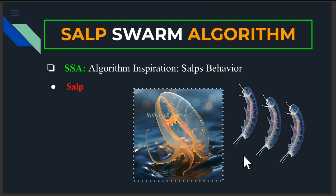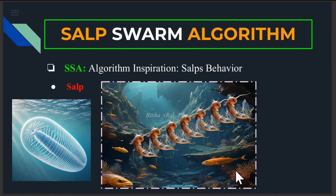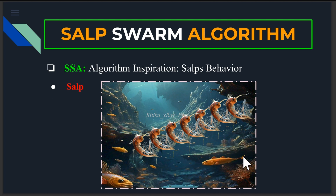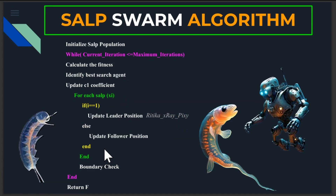Salps are transparent, barrel-shaped marine organisms that drift in ocean currents. They move by shrinking, which propels them forward, and form dense chains that help in coordinated movement. This helps them survive in large and dynamic environments, avoid predators, and identify food sources. This algorithm is modeled on this self-synchronized, chain-like movement behavior.